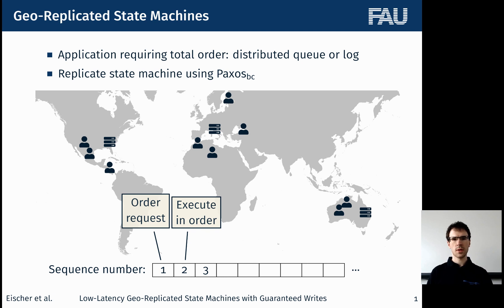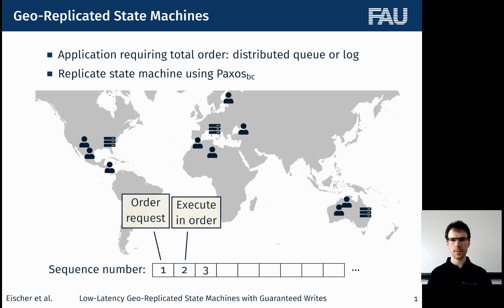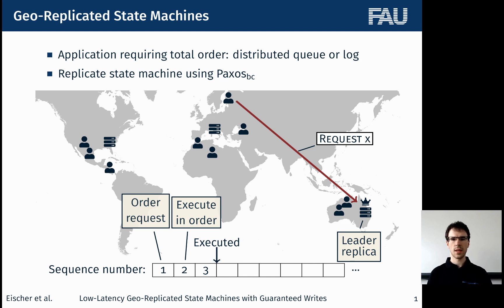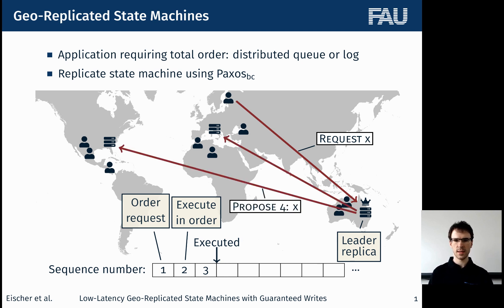The applications we've been looking at are ones which for consistent replication require totally ordered client requests, like a distributed queue where clients can enqueue and dequeue messages, or a log. In order to get such a total order, we can use an agreement protocol like Paxos or one of its variants to assign sequence numbers to requests and then execute them in that order. To do so, a client sends its request to a leader replica which then proposes the request for the next free sequence number.